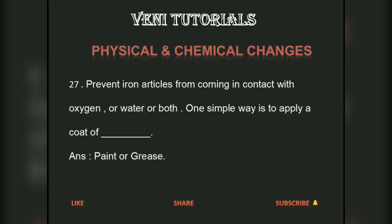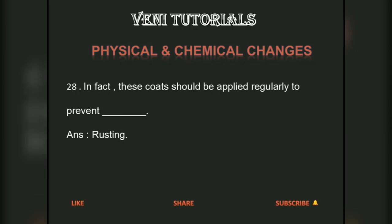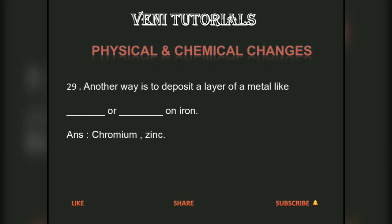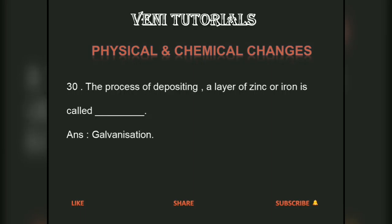To prevent iron particles from coming in contact with oxygen or water, one simple way is to apply a coat of paint or grease regularly to prevent rusting. Another way is to deposit a layer of a metal like chromium or zinc on iron. The process of depositing a layer of zinc on iron is called galvanization.